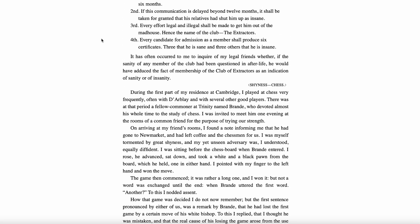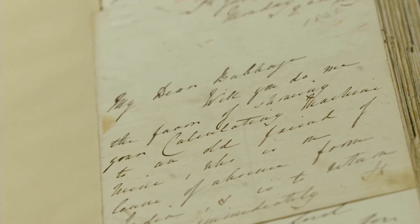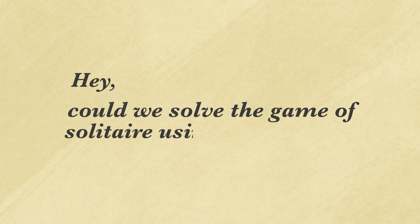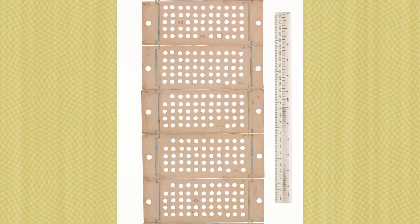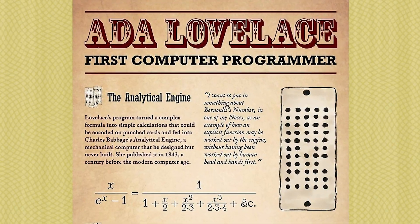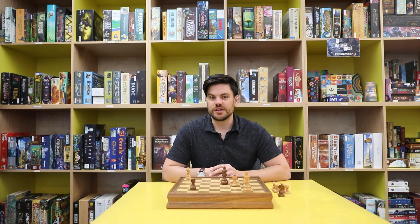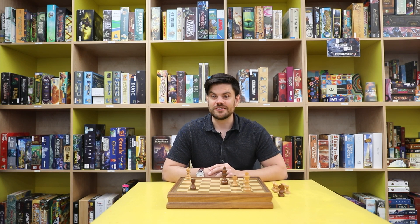We know from Charles Babbage's memoirs that he was a huge fan of chess at Cambridge. Ada Lovelace — one of the first letters she ever wrote to Charles Babbage — she asked whether we could solve the game of solitaire using mathematics. This found its way into her study of algorithms before she became what we call the world's first programmer, amounting to a systematic study of games that lasted decades and influenced every aspect of their designs for a computer.